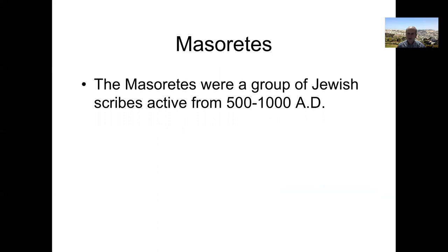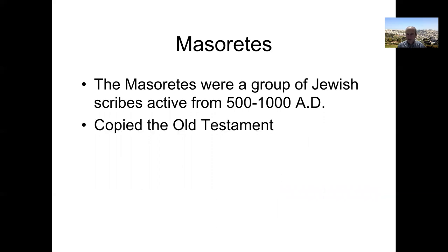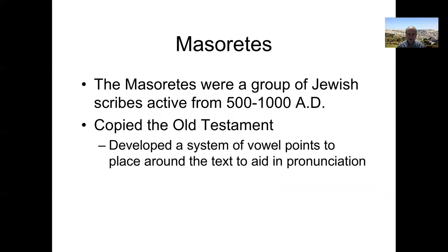Now let's talk about the Masoretes. The Masoretes were a group of Jewish scribes who were active from about 500 to 1000 AD. They copied the Old Testament, but in addition to copying it, they developed a system of vowel points to place around the text to aid in pronunciation.